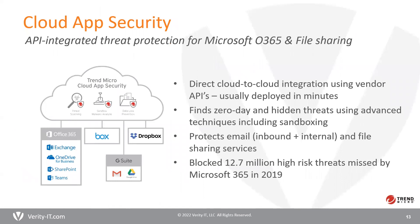Trend Micro has an offering called Cloud App Security. It actually protects Office 365 and cloud-based file sharing applications. Since email is the number one source of attacks, this will help you stop email-based threats like phishing and ransomware. It's 100% in the cloud and is proven Office 365 protection that helps uncover unknown threats.